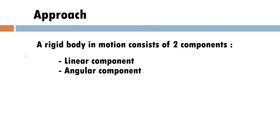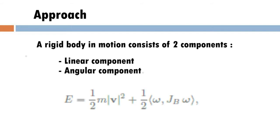Consider a rigid body in three-dimensional space. This body, when in motion, will possess a certain amount of kinetic energy. This kinetic energy is comprised of two components: a linear component and an angular component. And this is described by the equation that follows.